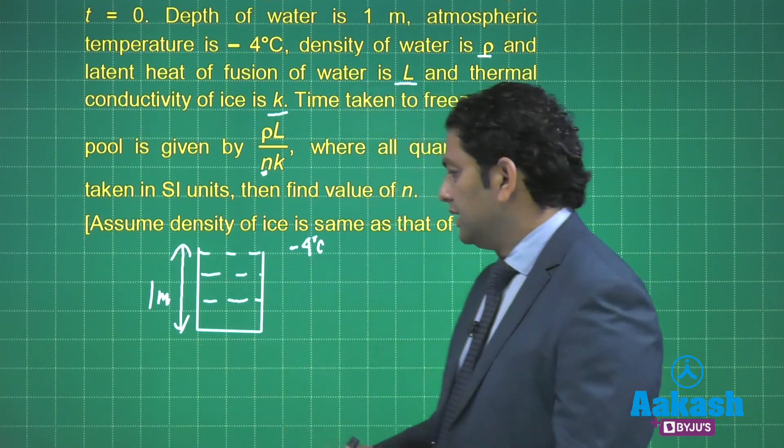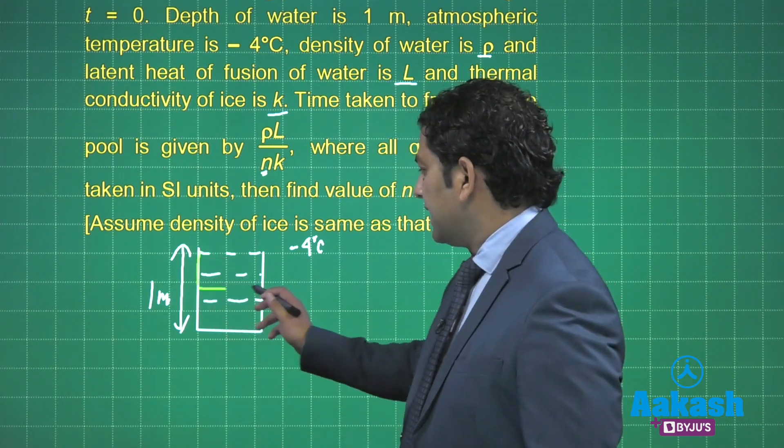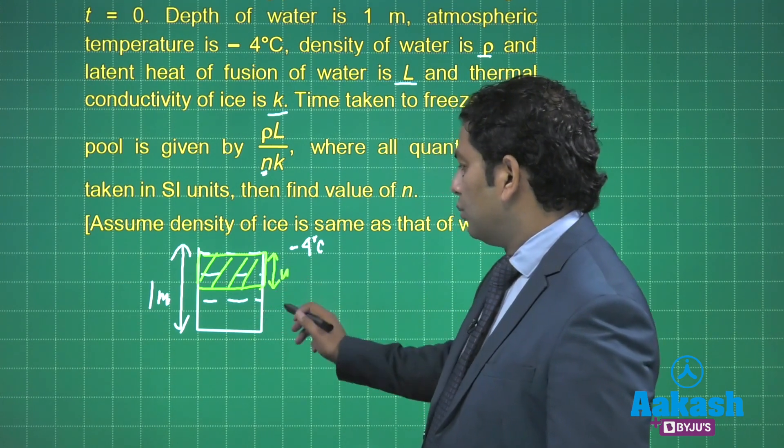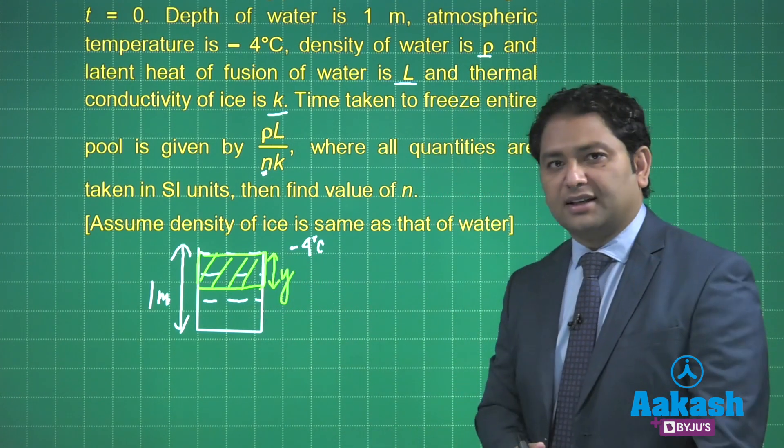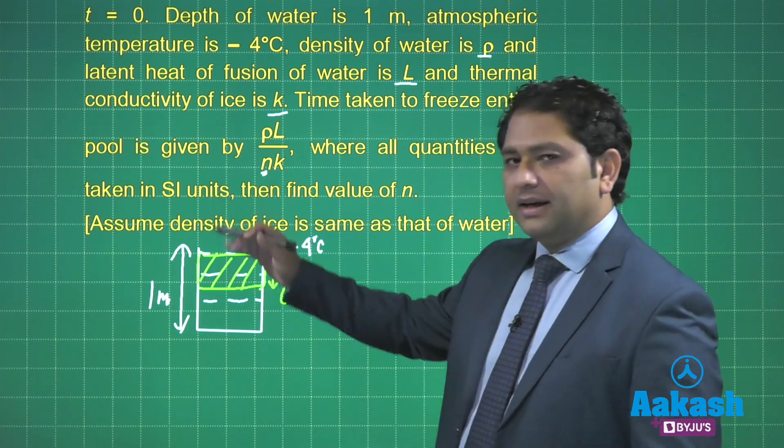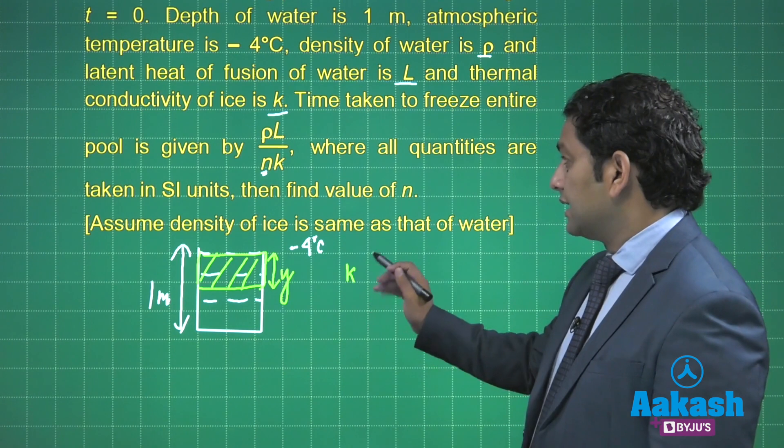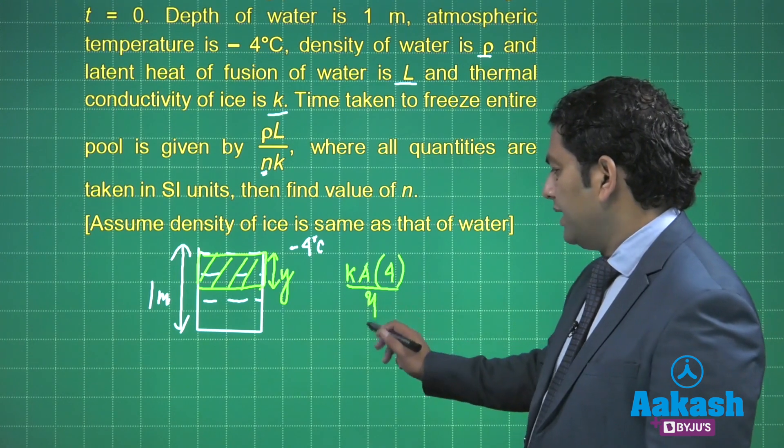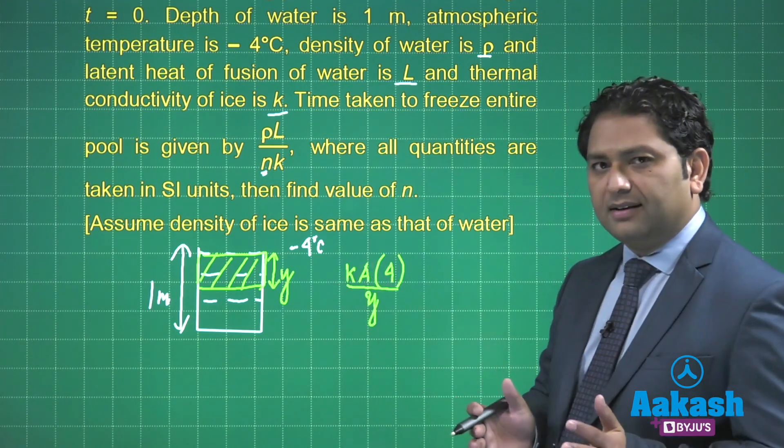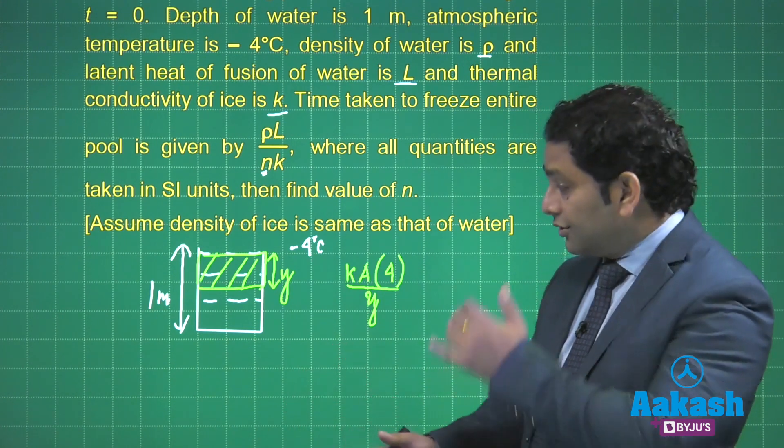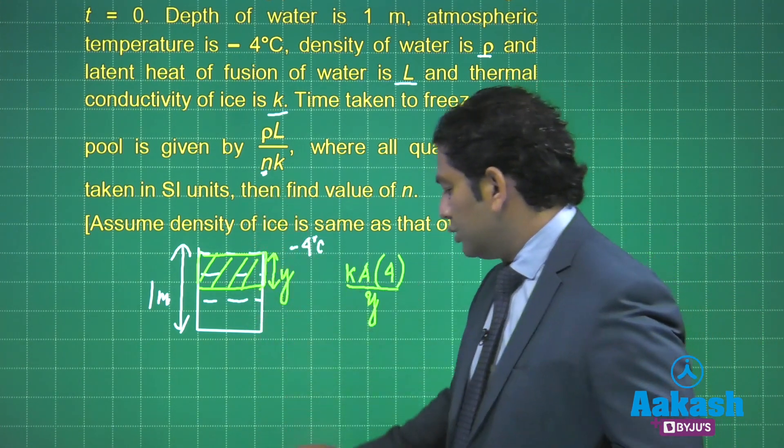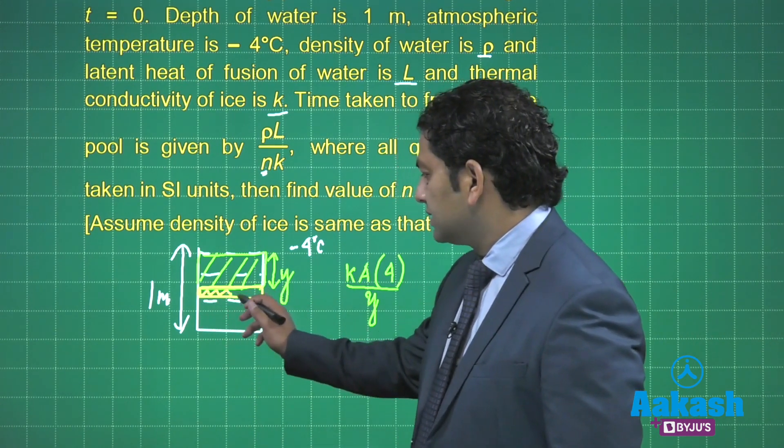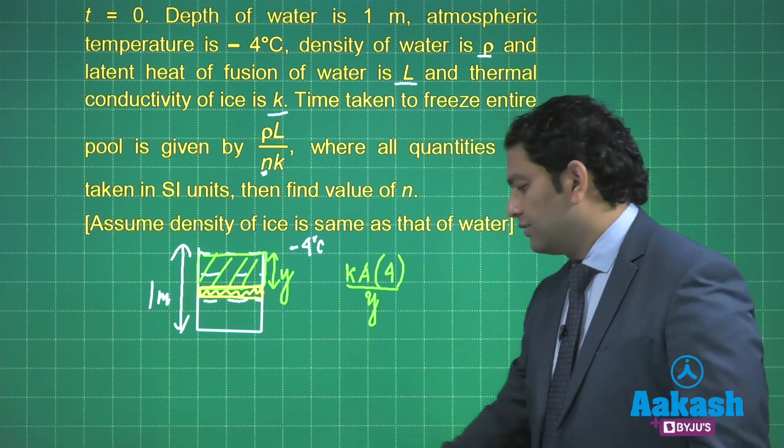So at this instant, what is the rate of heat passes? k conductivity, a temperature difference is 4 divided by... k·a·Δθ by y. This is rate of heat passes. Now you know this heat which flows outside will freeze a tiny layer of ice, so this is that additional layer of ice which would be frozen.